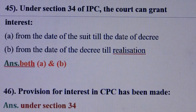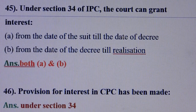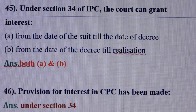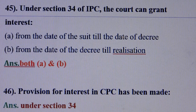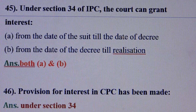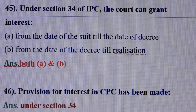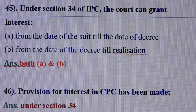Question number 45: Under section 34 of CPC, the court can grant interest — answer is: both Option A and Option B. That means: Option A — from the date of the suit till the date of decree; Option B — from the date of the decree till realization.